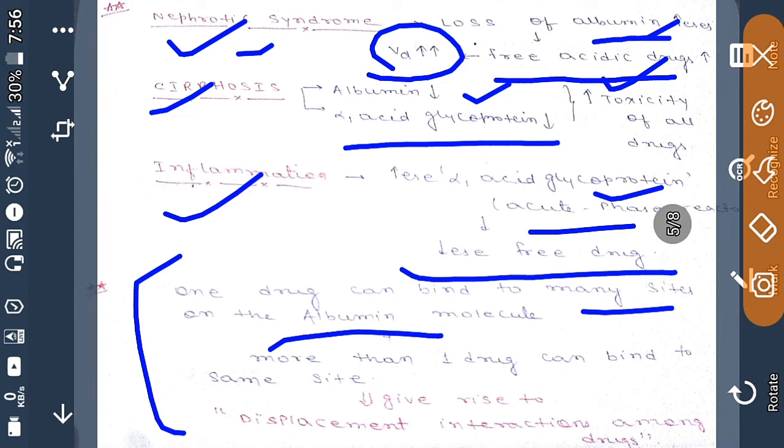Now one drug can bind to many sites on the albumin molecule, so more than one drug can bind to the same site. This gives rise to displacement interaction among the different drugs because one drug is binding to many sites on the albumin molecule, or we can say more than one drug can bind to the same site. These two give rise to the displacement interaction among the drugs.